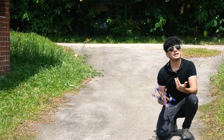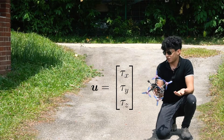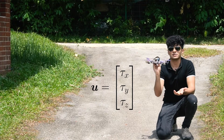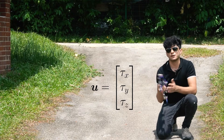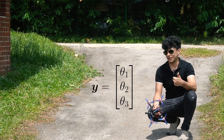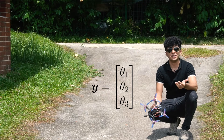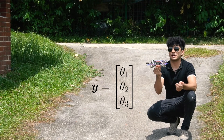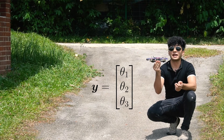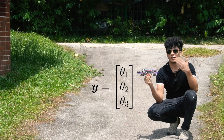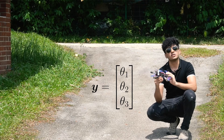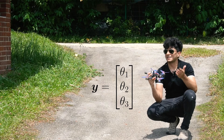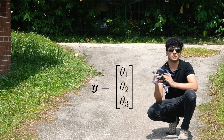Now what are the inputs to our system? Simply, they're going to be the three torques: tau x, tau y, tau z in the body reference frame. And the outputs — well, that depends on what we're trying to build. Right now let's say we're trying to build an attitude stabilizer, something that controls the angular positions. So the outputs we care about are going to be theta 1, theta 2, theta 3, which is actually a subset of our state variables.